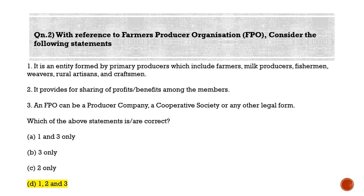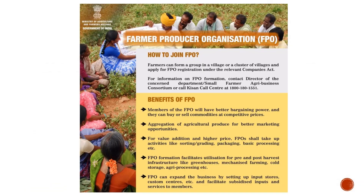The correct answer is option D — one, two, and three. All statements are correct. In India, 86 percent of individual landholdings are below 2 hectares, occupying 47 percent of the country's total cultivated area. For example, a farmer may have 0.5 hectare of land spread across five to ten fragmented plots. These scattered individual farmers have no bargaining power or political influence in securing loans from scheduled banks, and production and productivity are generally low with limited marketable surplus. FPOs effectively address these challenges.